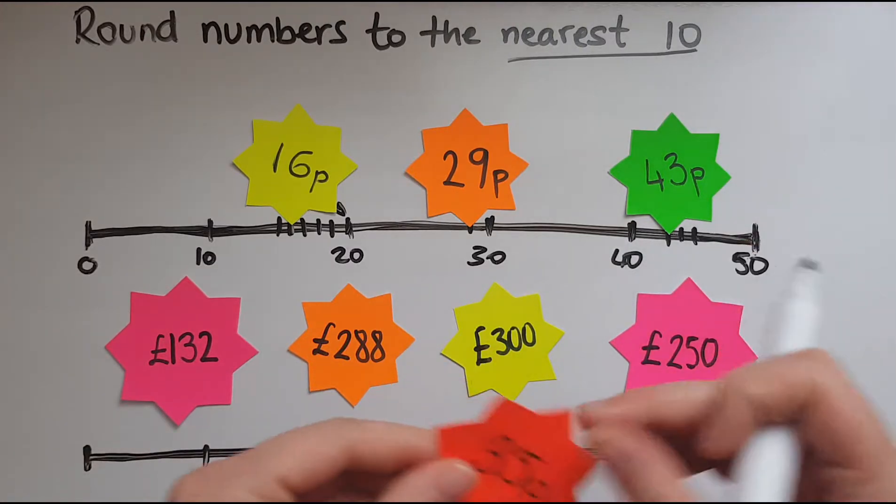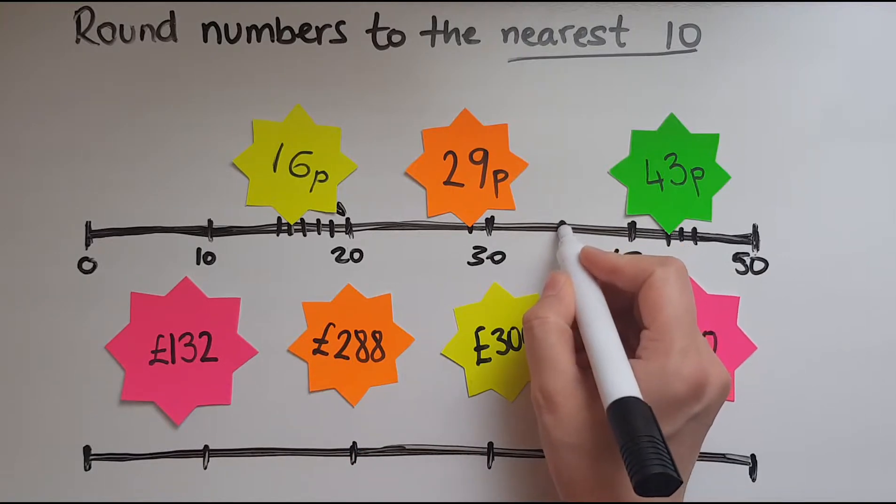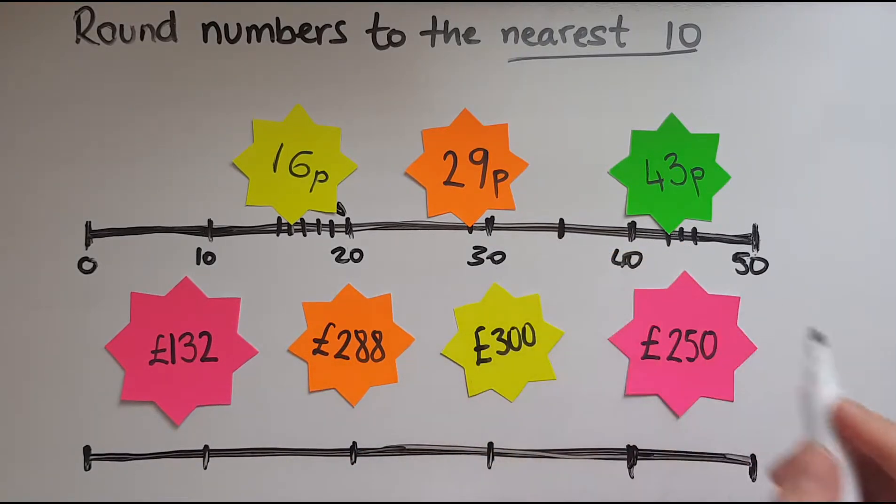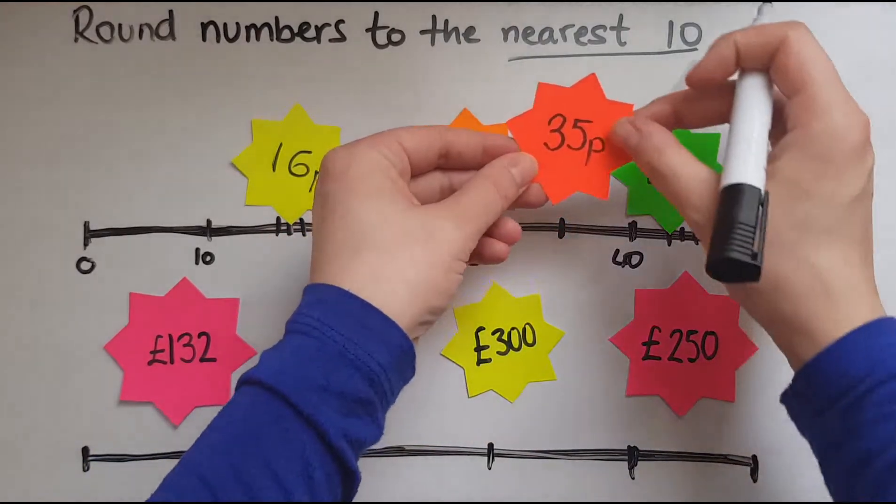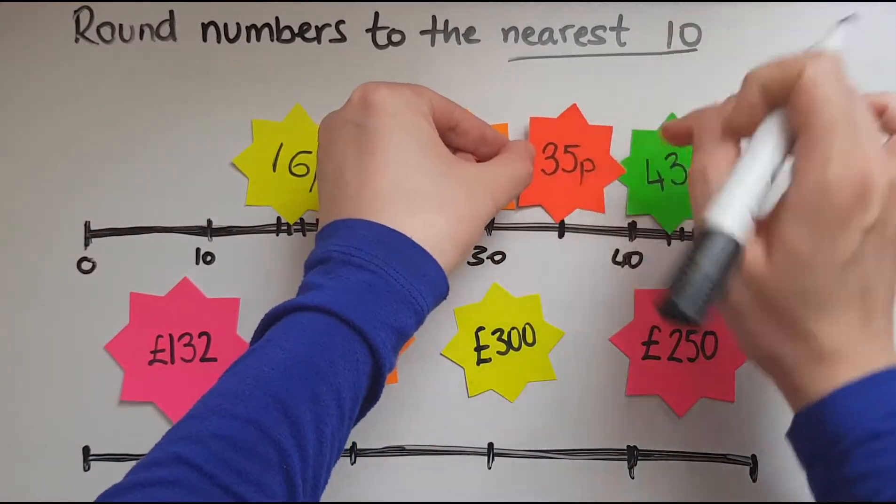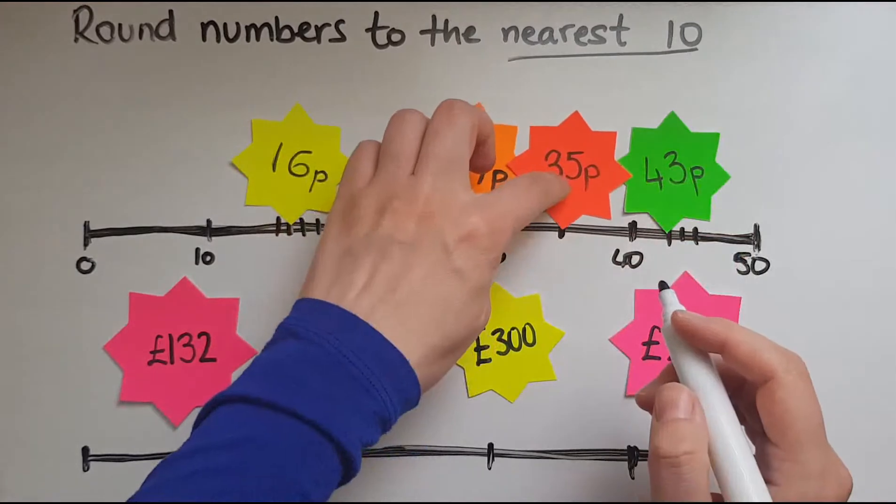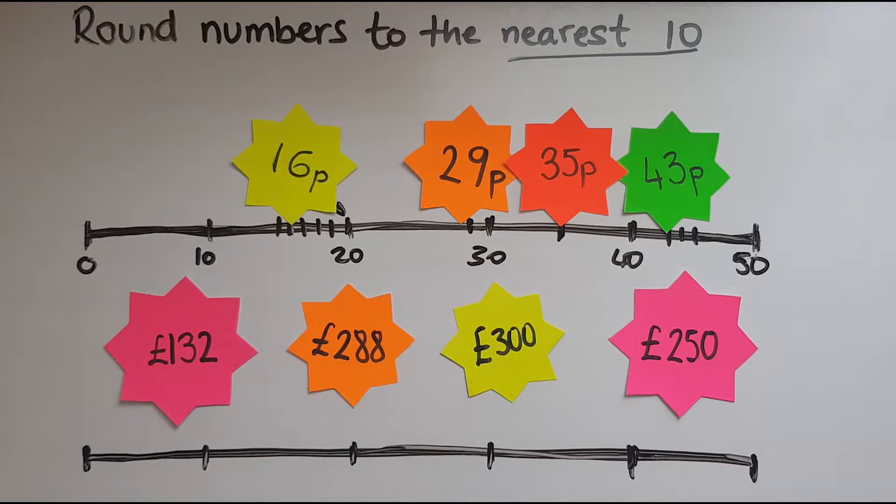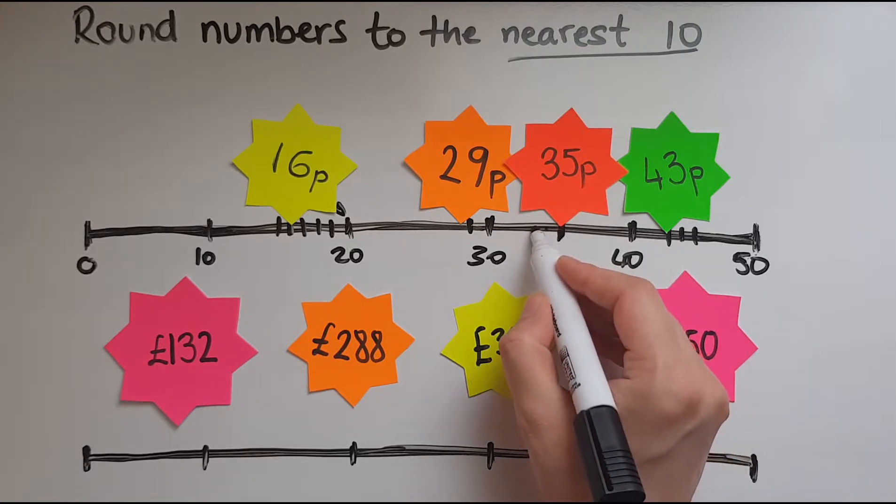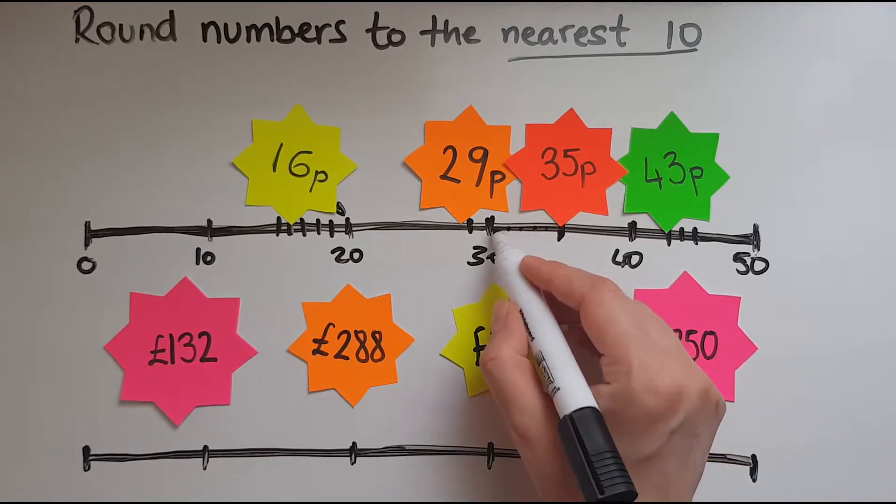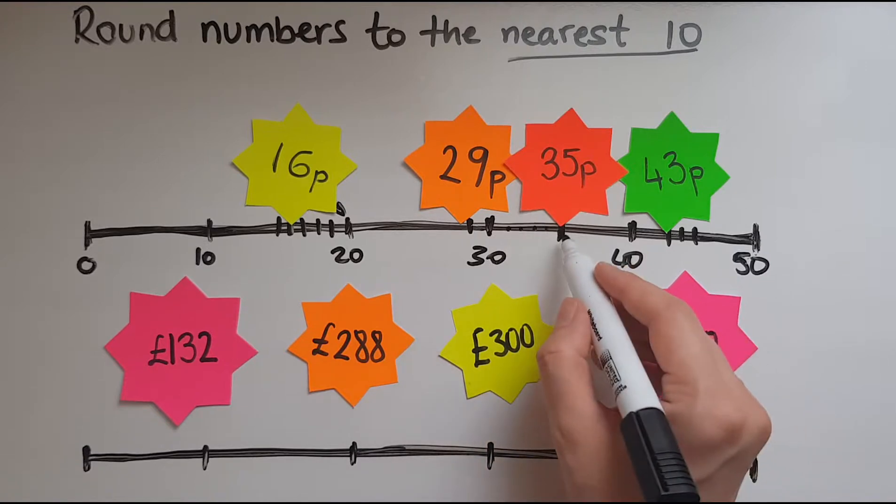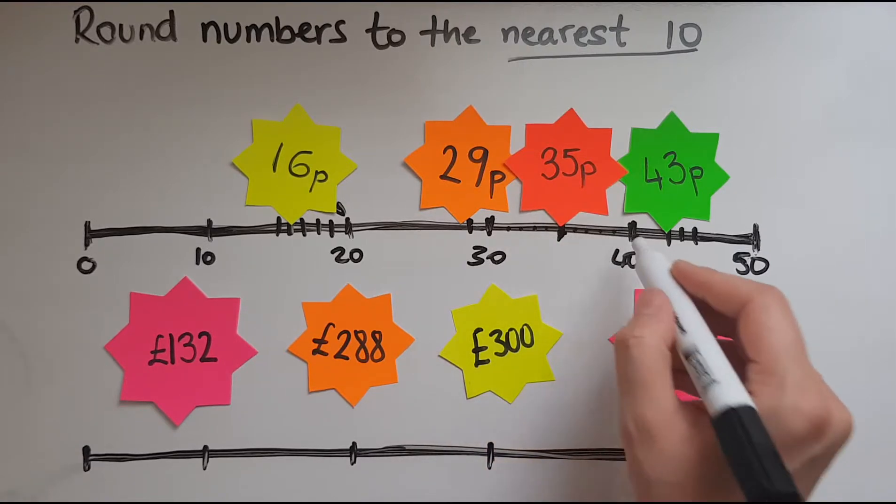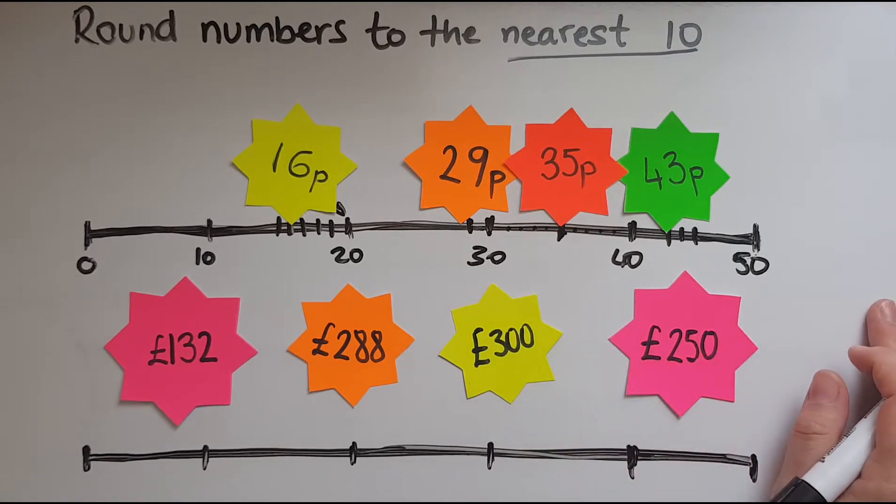Now 35, 35 is right in the middle between 30 and 40 and we said since that is right in the middle it would be rounded up. So 34, 33, 32, 31 and 30 rounded to 30, whereas 35, 36, 37, 38, 39 would be rounded to 40.